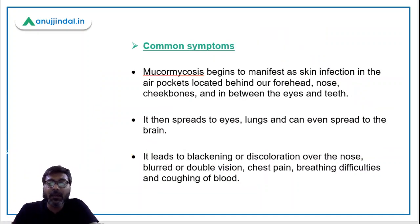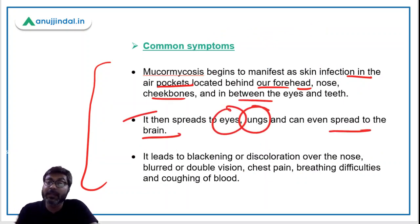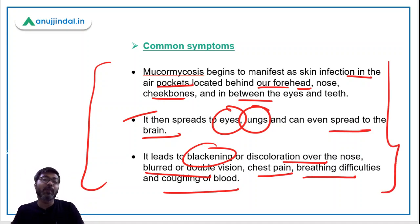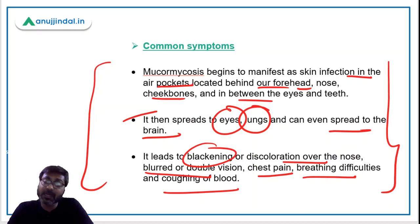Mucormycosis affects the air pockets located behind our forehead, nose, cheekbones, and between the eyes and teeth. It then spreads to the eyes and lungs, and can even spread to the brain. Symptoms include blackening or discoloration over the nose, blurred or double vision, chest pain, breathing difficulties, and coughing of blood. If you find anyone with these symptoms, please advise them to go to the hospital.